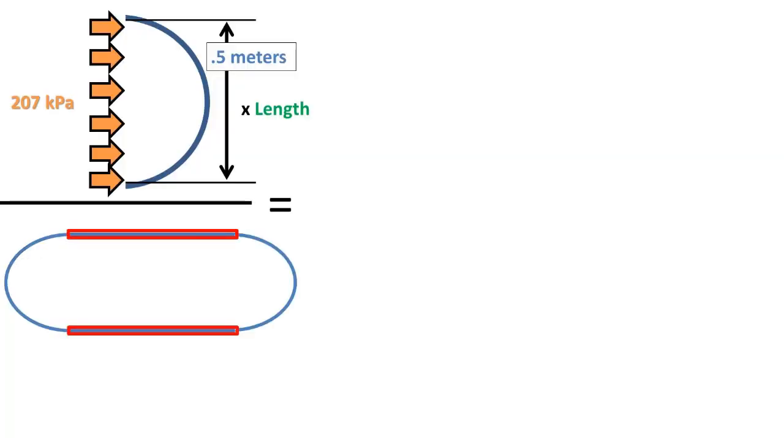To further visualize the formula, we have that the pressure times the internal diameter of 0.5 meters times the length gets us to the force acting 90 degrees perpendicular to the cross-sectional plane.